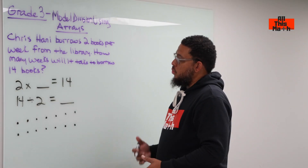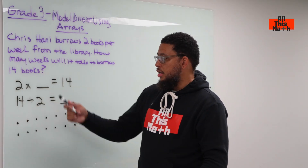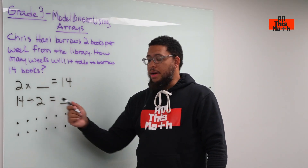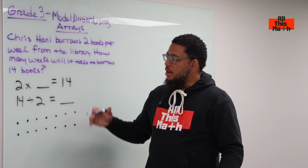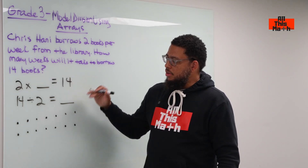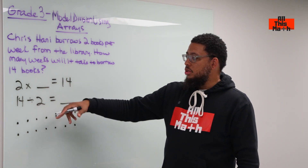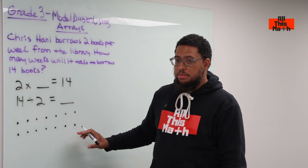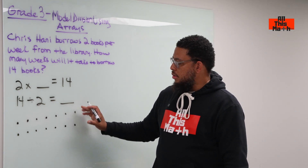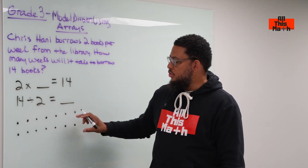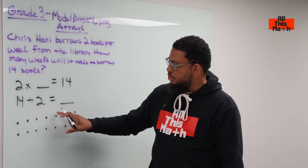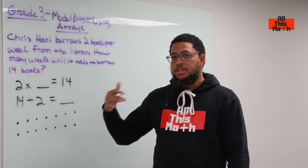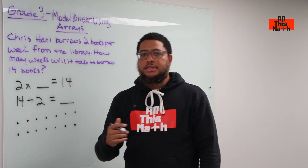The purpose of this is to show the connection between multiplication, division, and array models. The array model is very useful because it provides a visual representation of what's actually happening in both multiplication and division problems. We can also say there are 14 books total — each dot represents a book — and we divide by two to find how many groups of two we have: one, two, three, four, five, six, seven. So we can use array models to show division just as we use them to show multiplication. And that's today's lesson.